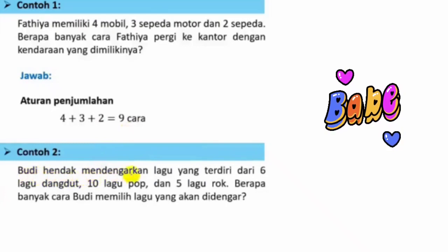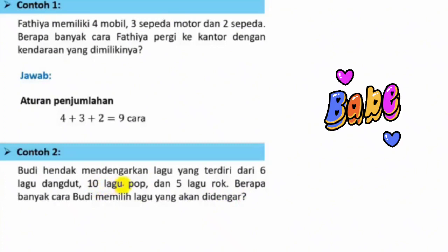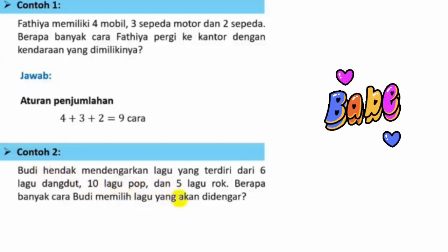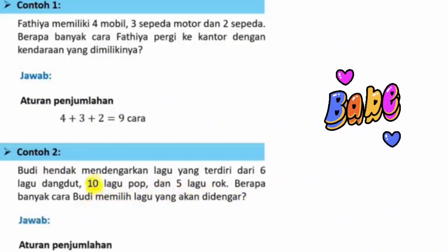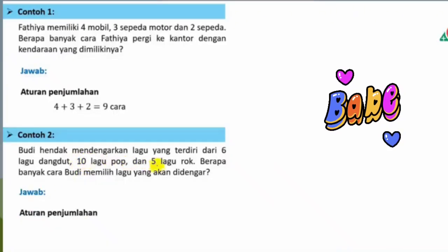Contoh 2: Budi hendak mendengarkan lagu yang terdiri dari 6 lagu dangdut, 10 lagu pop, dan 5 lagu rock. Berapa banyak cara Budi memilih lagu yang akan didengar? Ini berupa pilihan karena tidak mungkin Budi mendengarkan dua lagu atau lebih secara bersamaan. Jadi menggunakan aturan penjumlahan: 6 tambah 10 tambah 5 sama dengan 21 cara.